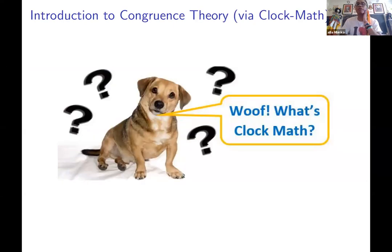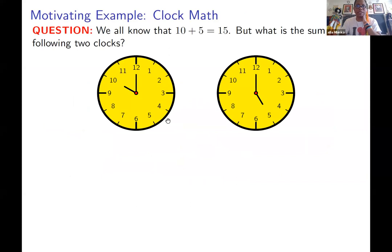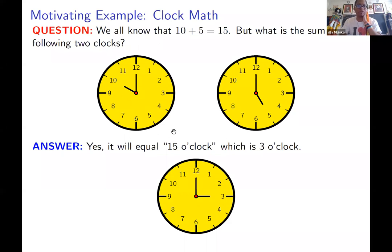Let's introduce you to congruence theory, although probably half the audience is already well-versed. It's clock math, essentially. We all know 10 plus 5 equals 15, but what is the sum of 10 o'clock plus 5 o'clock? It's 3 o'clock — because if you're in the Army and think it'd be 1500 hours, that's essentially 3 o'clock. If we add 5 hours to 10 o'clock, we're at 3 o'clock. Analog clocks are kind of going out of style, but it's important to understand congruence theory.